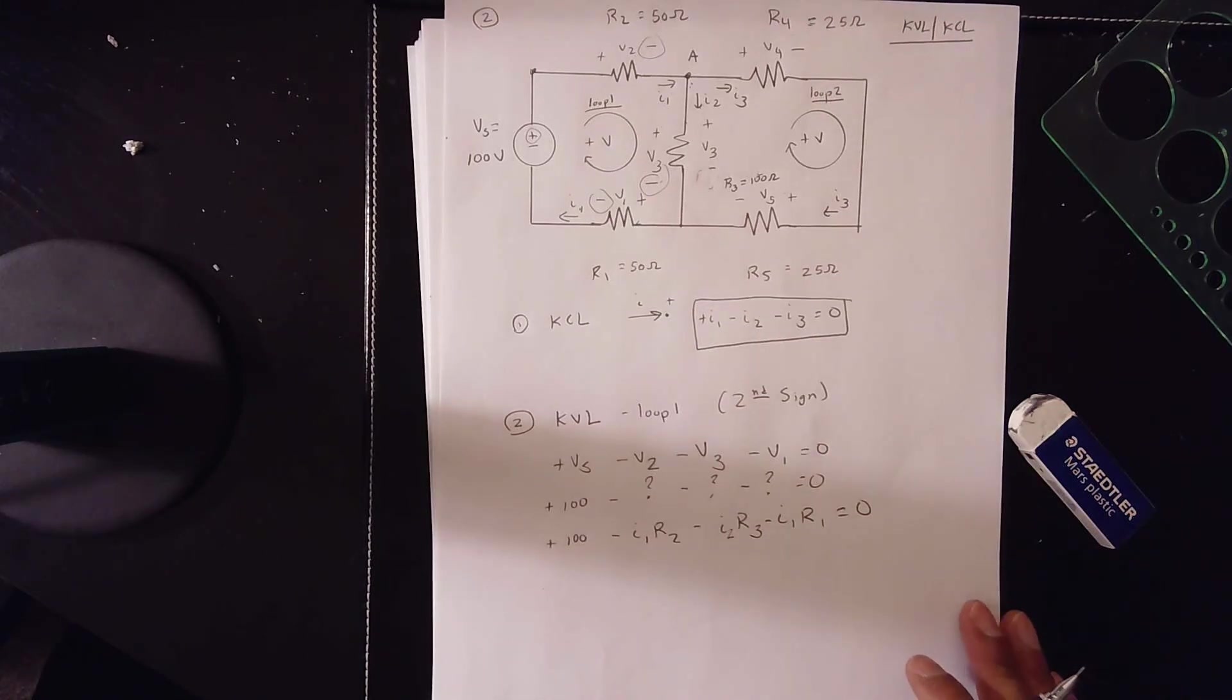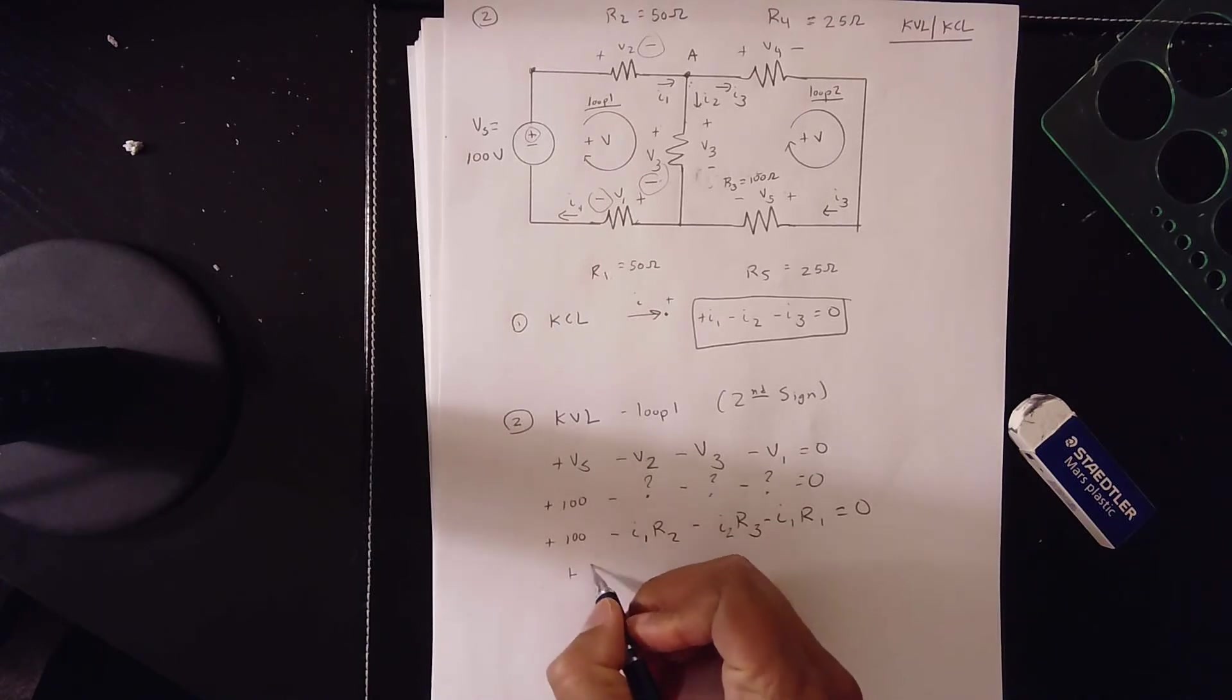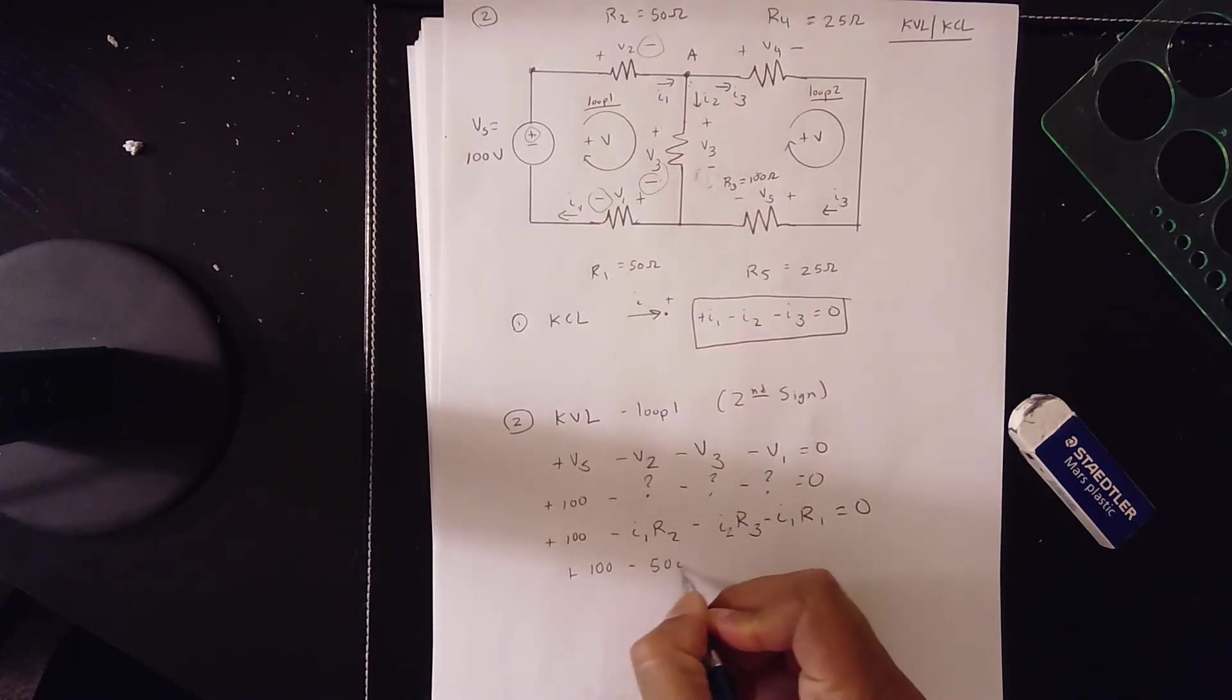Now we plug it in. Plus 100. Minus. R2 value is 50. 50. I1.